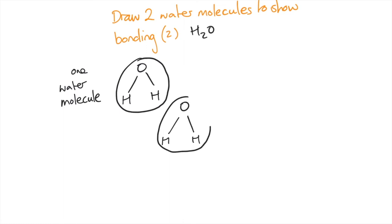And the second one, you need to orientate the oxygen towards the hydrogen and draw a dotted line and label that hydrogen bond.